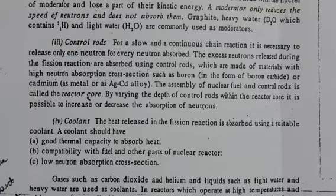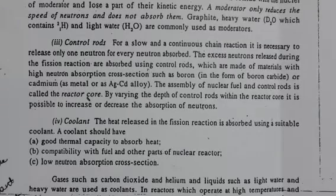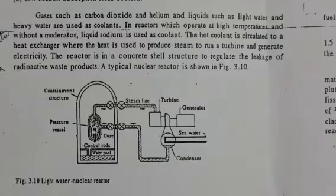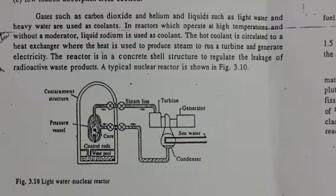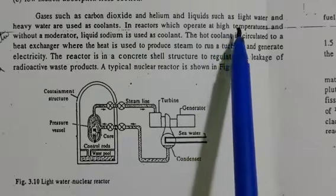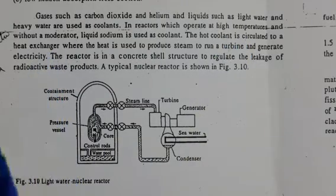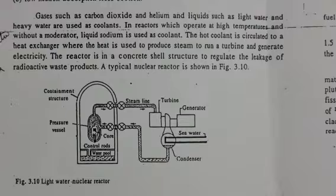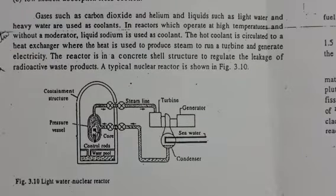The coolant should have a low neutron absorption cross-section. Generally, gases such as carbon dioxide and helium, and liquids such as light water and heavy water, are used as coolants. In reactors which operate at high temperatures and without a moderator, liquid sodium is used as the coolant.